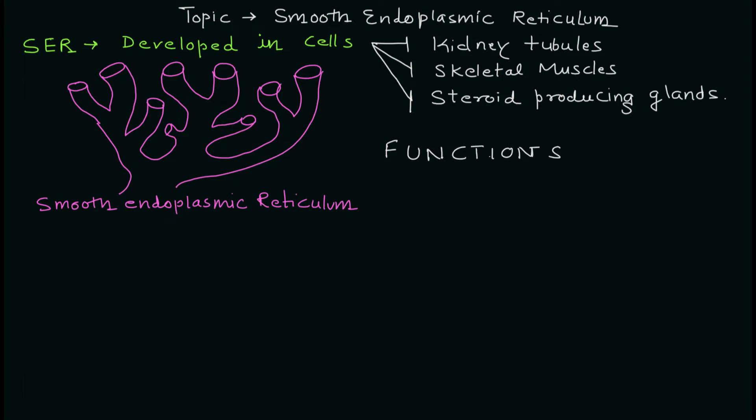Now, let's discuss some of the important functions of smooth endoplasmic reticulum. I have already mentioned the cell types where this particular organelle is present in high amount. First, function is to produce steroid hormone. Steroid hormone synthesis is the major function of this organelle. That is why it is present in the endocrine cells of adrenal cortex. This is one important point you should remember.